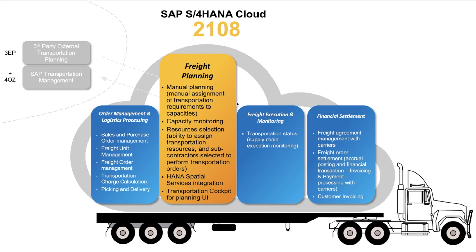The novelty is really around freight planning, where you can now perform manual planning — there is no optimizer planning. This is the ability to assign freight units to freight orders by drag and drop in a quite pleasant-to-use UI. You can also do capacity monitoring, checking if the number of freight units loaded onto a freight order exceed the maximum allowed capacity of the resource. There is also the ability to perform resource selection — you can create your own resources such as a van or a truck, which will have different capacities in weight, volume, or area.